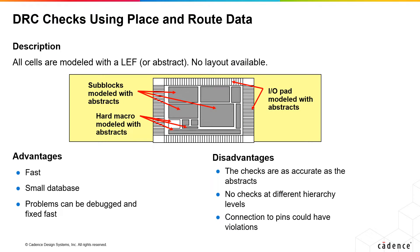When DRC checks are run using place and route data, the models of the cells are in LEF or abstract format. Layouts are not used because they contain more detail than the place and route tool needs. The advantage of running DRCs with a small dataset is that it's fast, and problems can be debugged and fixed quickly in the place and route tool instead of going to a custom tool.